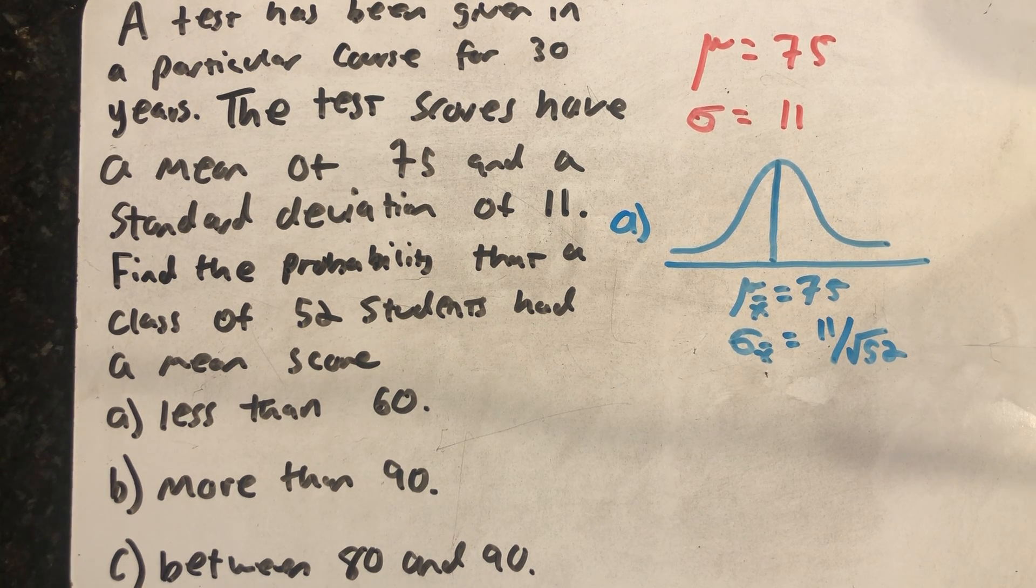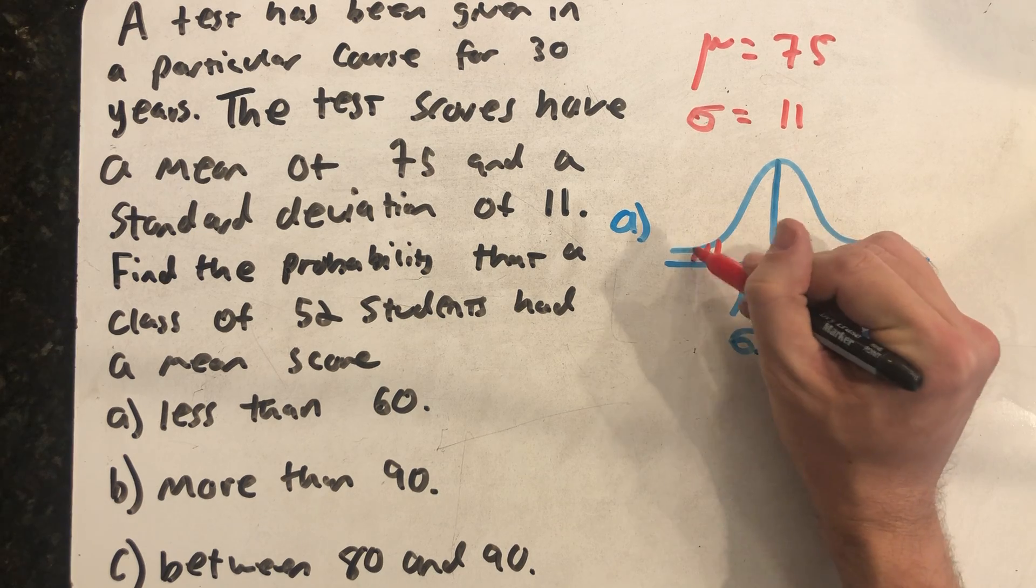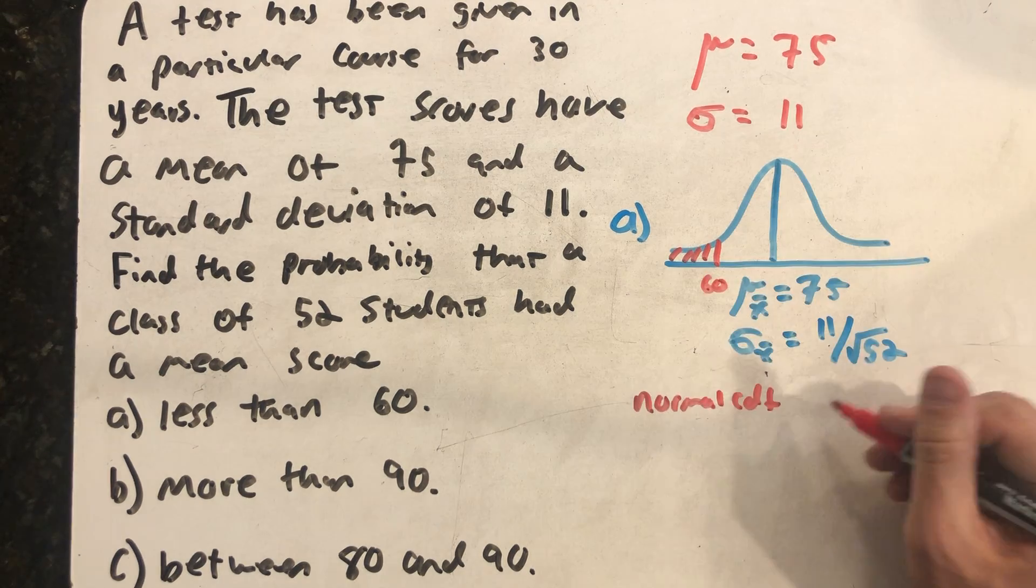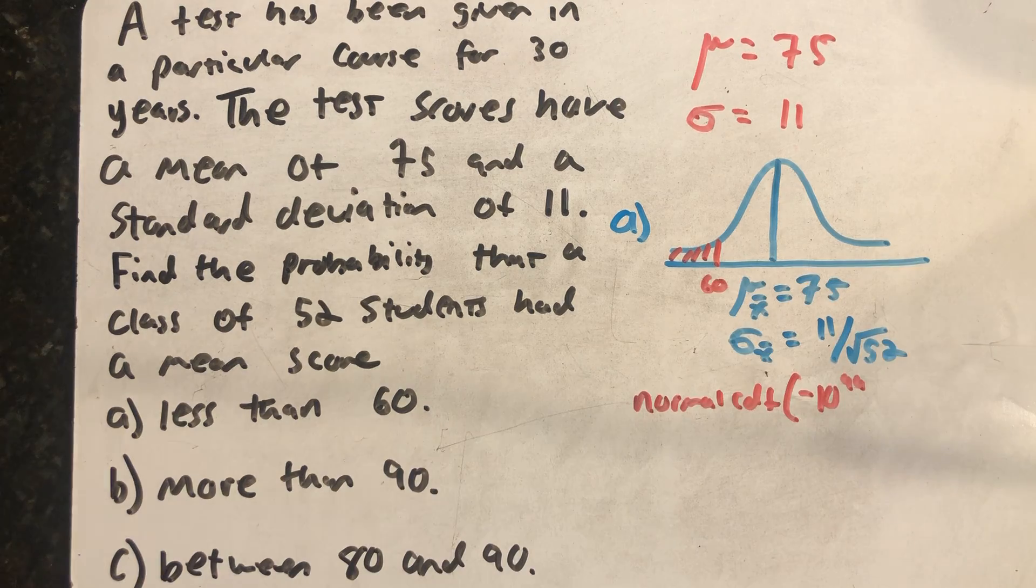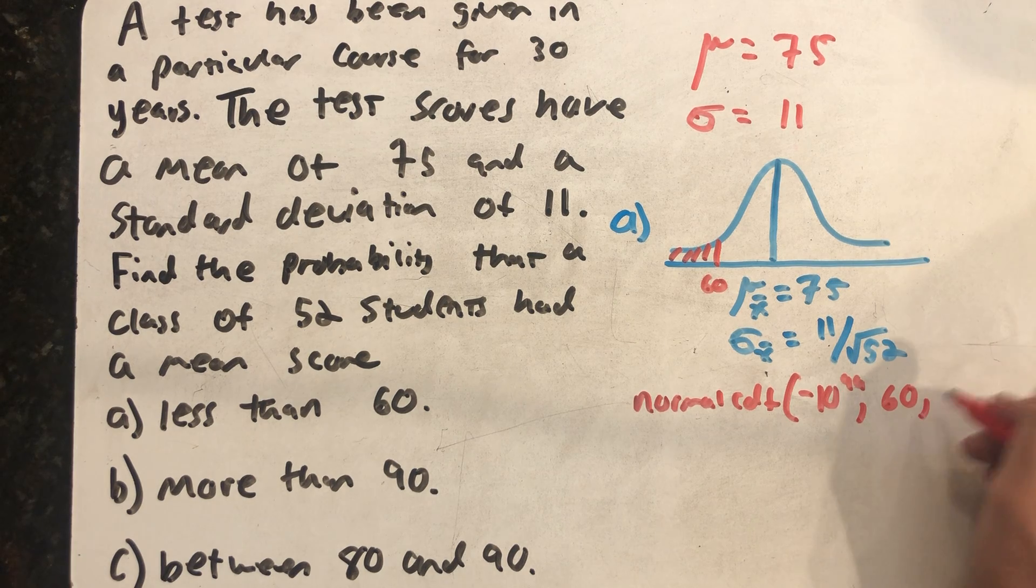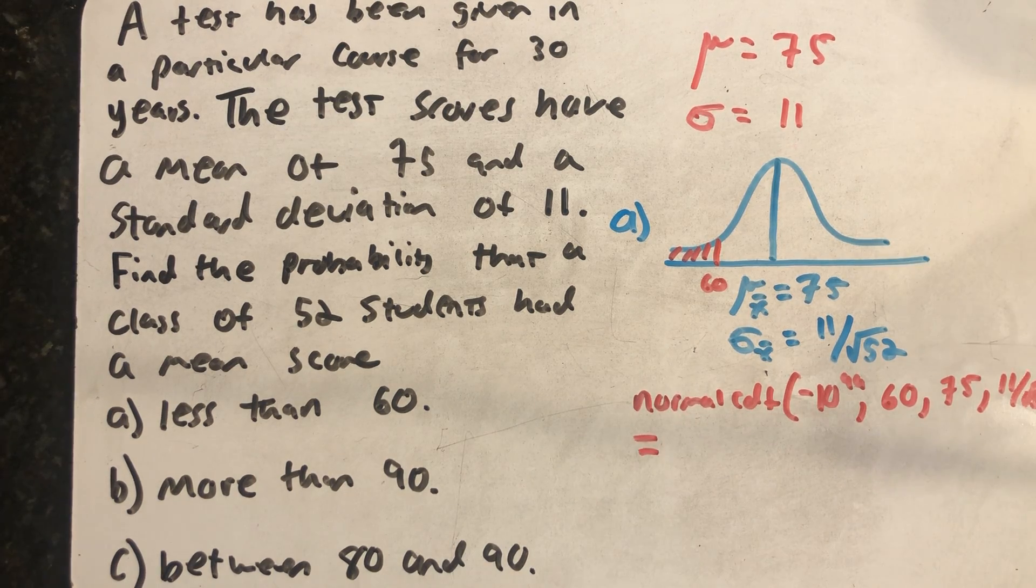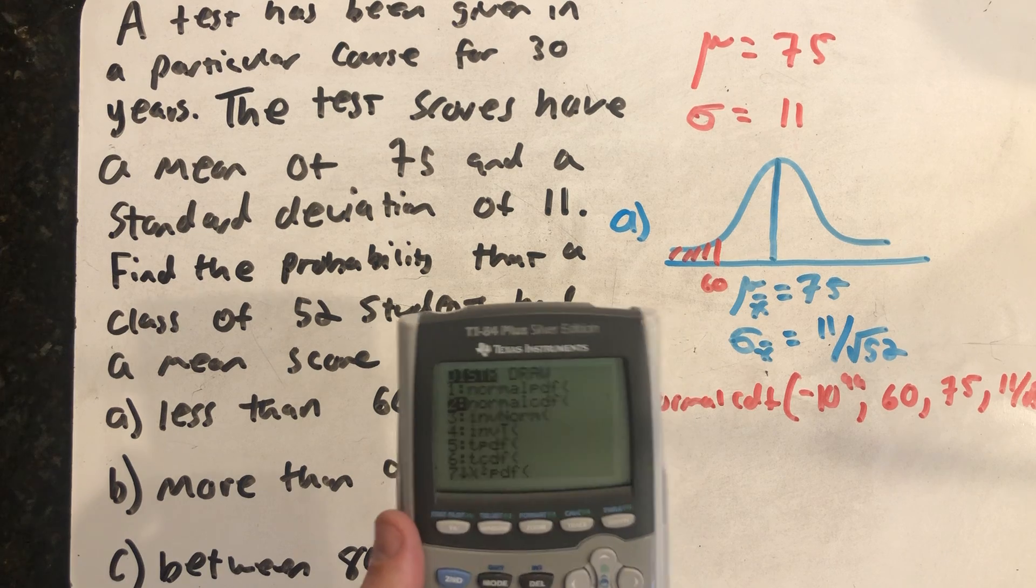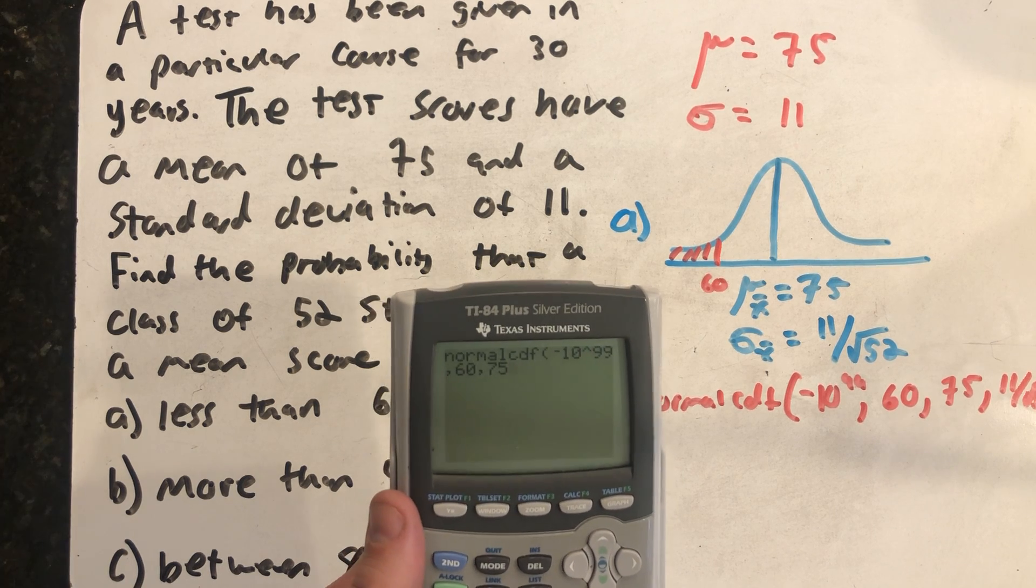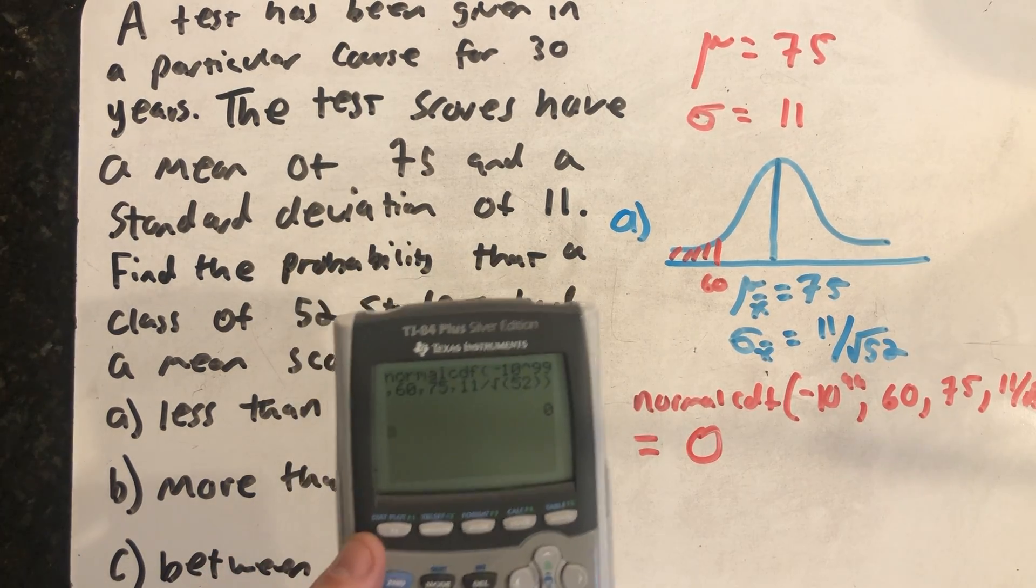All right, here in part A, I'm looking for the probability that I get a class whose mean score is unfortunately less than 60. All right, well I'm dealing with a less than, so I'm going to measure that shade over that way forever. So a minus 10 to the 99th comma 60 comma the mean comma the standard deviation. Let's type that into our TI-84 and see what happens. The calculator tells me zero.